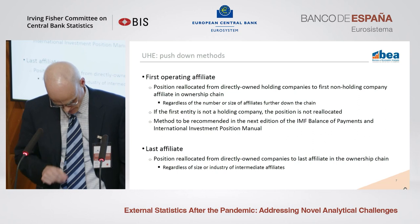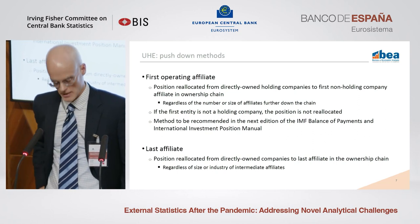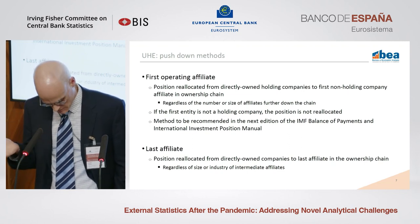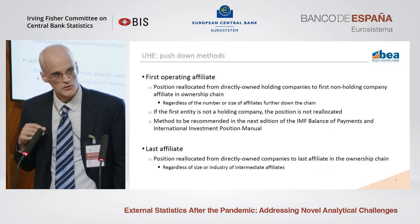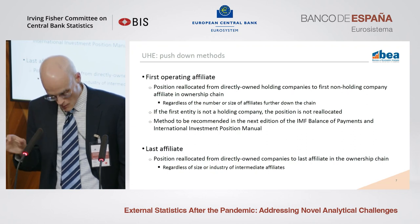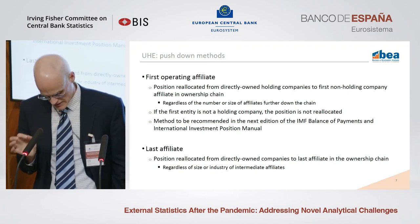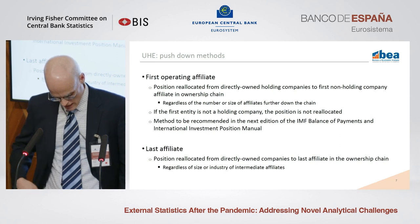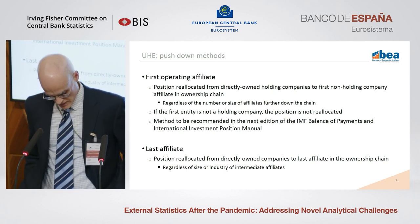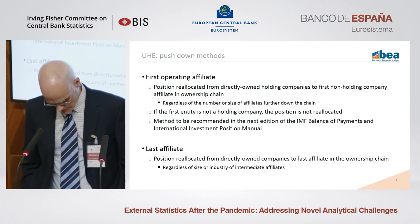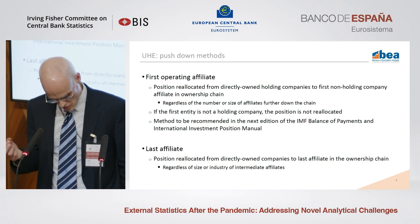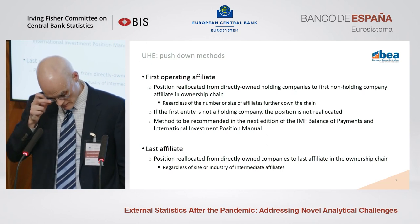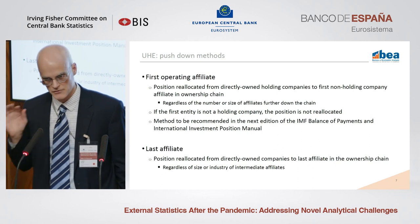The push-down methods push or move the position from the first entity in the ownership chain to another entity or entities. They do not try to reallocate the position to every entity along the chain, but they do look beyond holding companies. The first operating affiliate method reallocates the position from holding companies to the first non-holding company affiliate in the ownership chain. It stops once it gets to an operating company. If the first affiliate is already an operating company, the position is not reallocated.